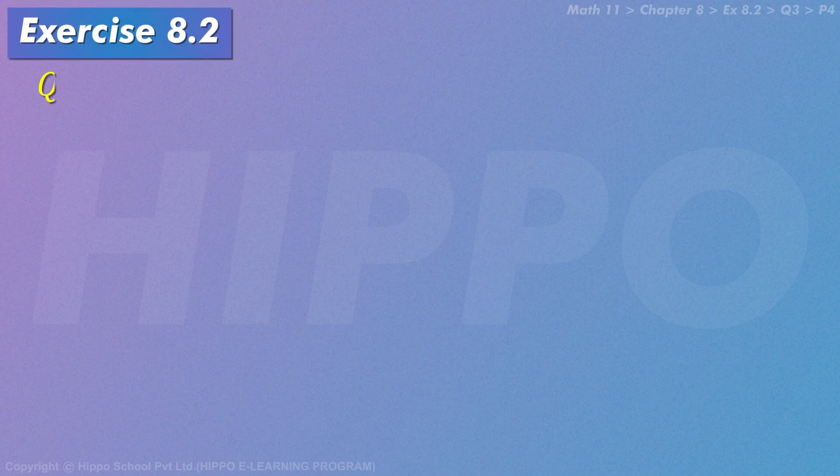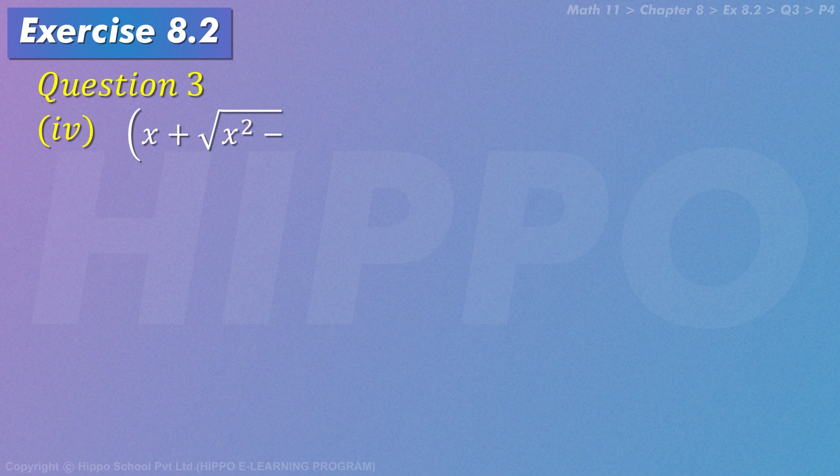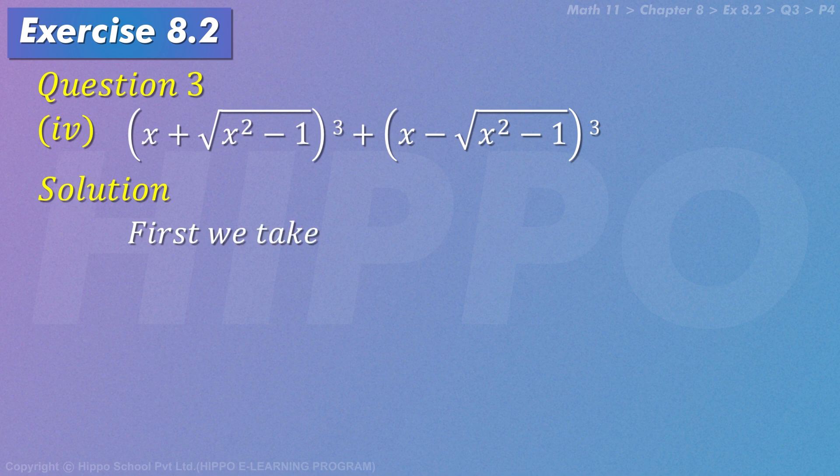Exercise number 8.2, question number 3, part 4: (x + √(x² - 1))³ + (x - √(x² - 1))³. First we take (x + √(x² - 1))³.